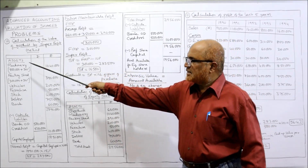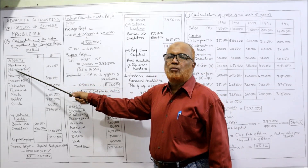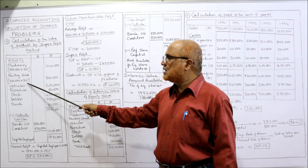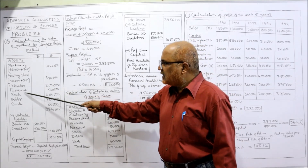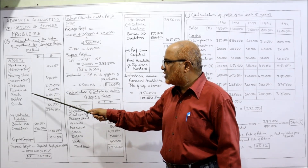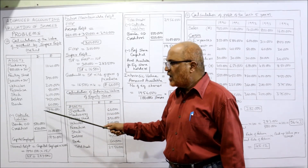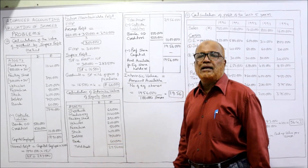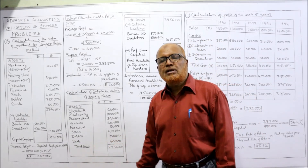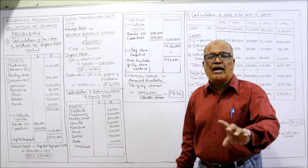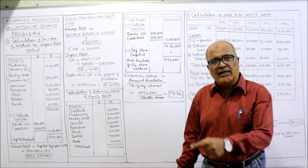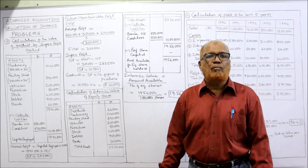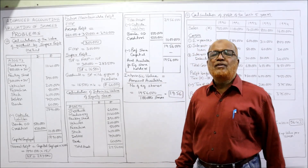Calculation of goodwill by super profit method. Assets: machinery book value 8 lakh, with 30% increment = 10 lakh; factory shed book value 3 lakh, 30% increase = 3 lakh 90 thousand. All other assets — vehicle, furniture, stock, debtors, bank — remain the same. Total assets = 28 lakh 90 thousand. Outside liabilities: bank overdraft and creditors = 10 lakh. Capital employed = 18 lakh 90 thousand. Normal profit = capital employed × NRR = 18 lakh 90 thousand × 15% = ₹2,83,500.